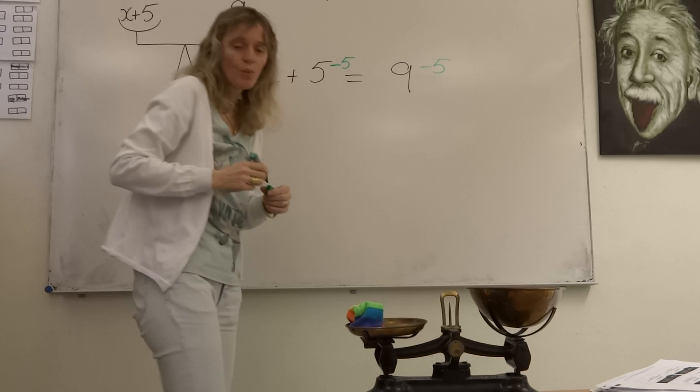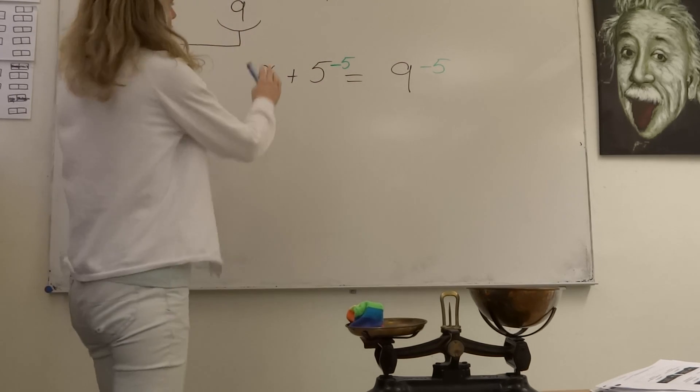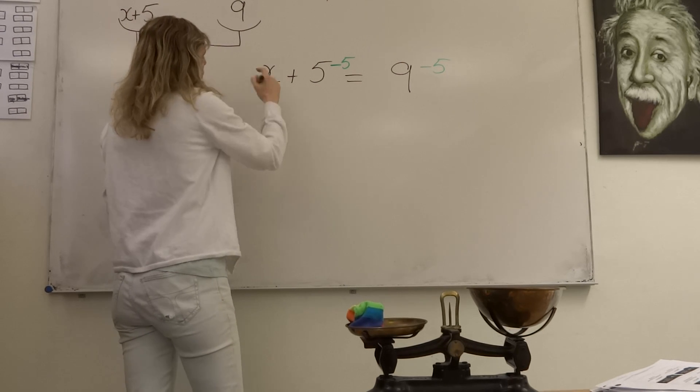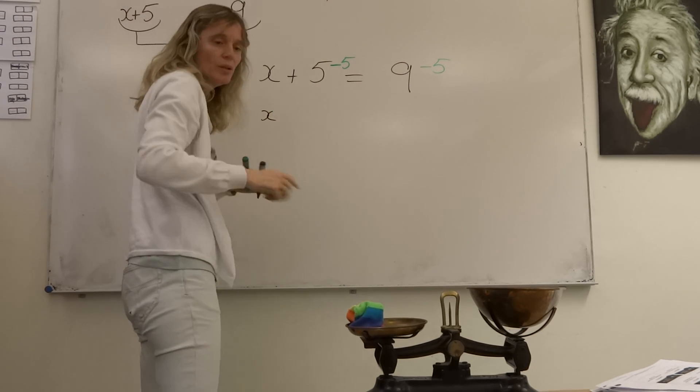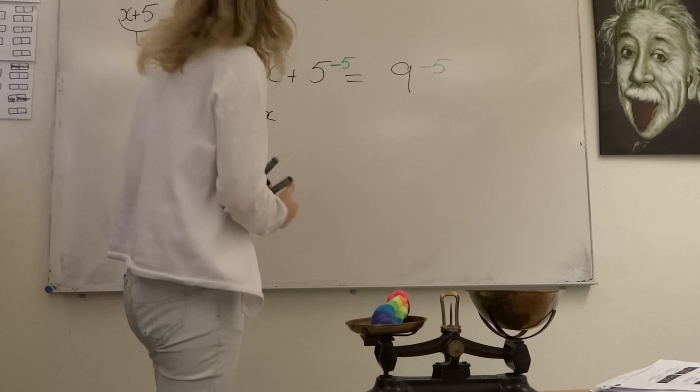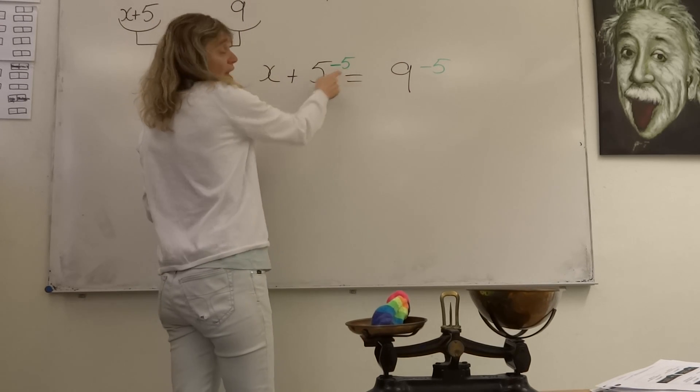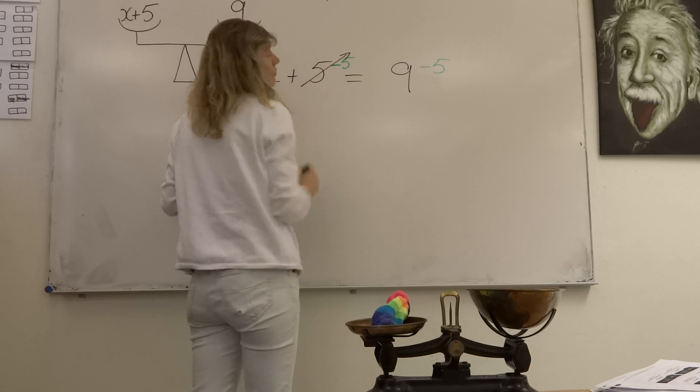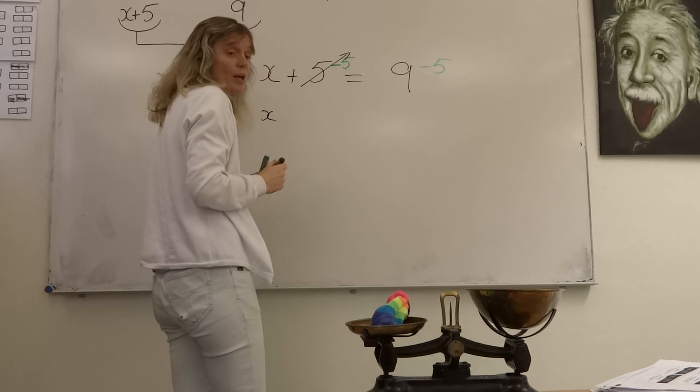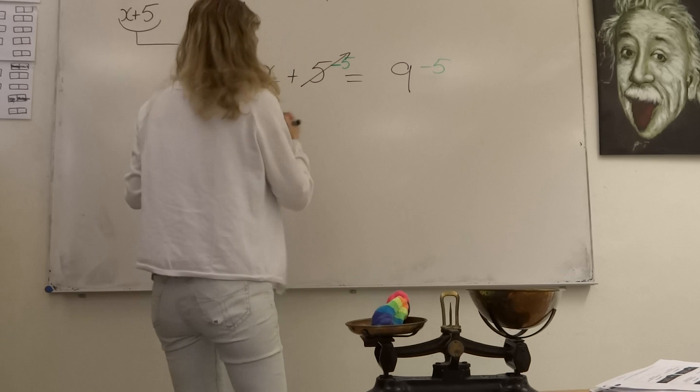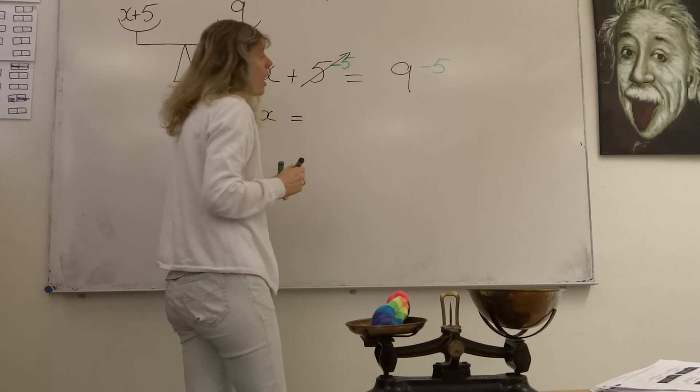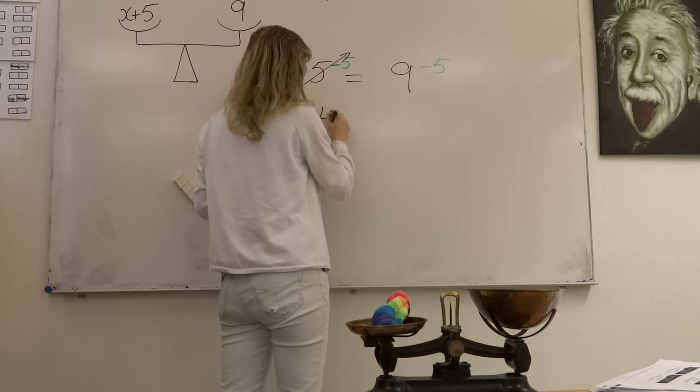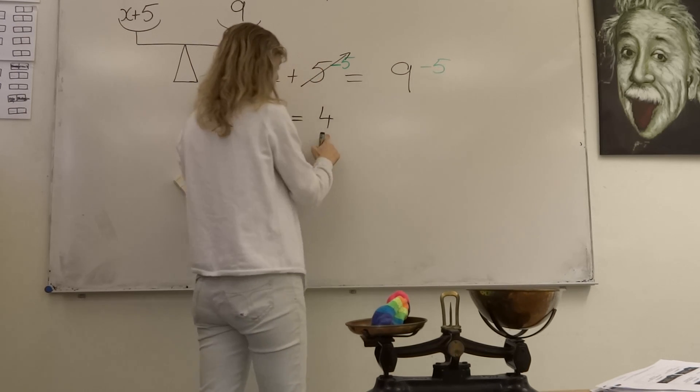As long as I do the same thing to both sides of my equal sign, I'm allowed to do it. So, my x, I haven't changed that at all. Here's my x. I took away the 5 coins that were on that side. So, I don't have anything here anymore. 5 minus 5 is 0. I just have my x on this side. And it equals, I had 9, but I took away 5 coins. So, I now know that 9 minus 5 is 4.